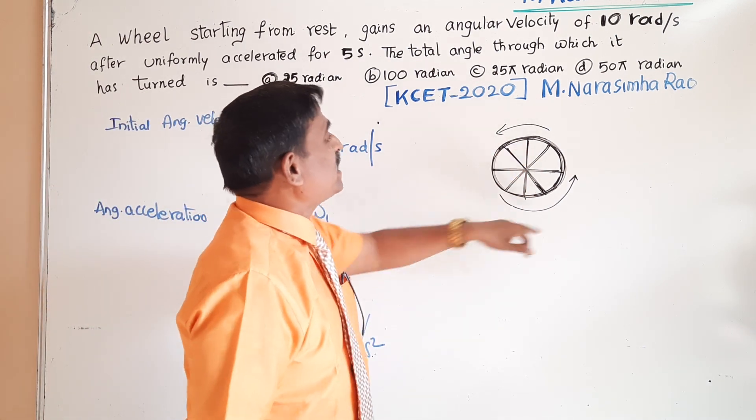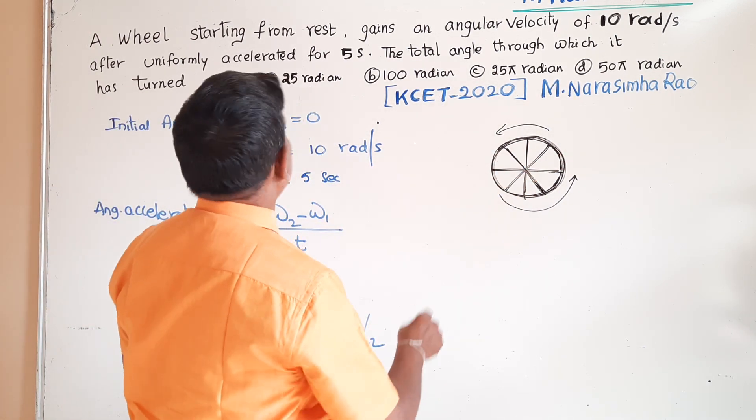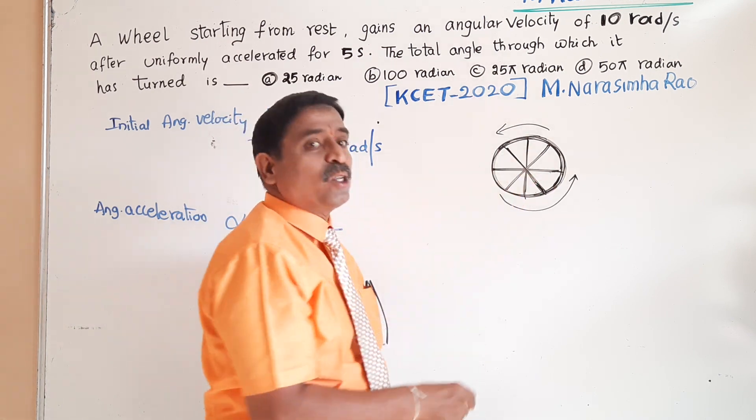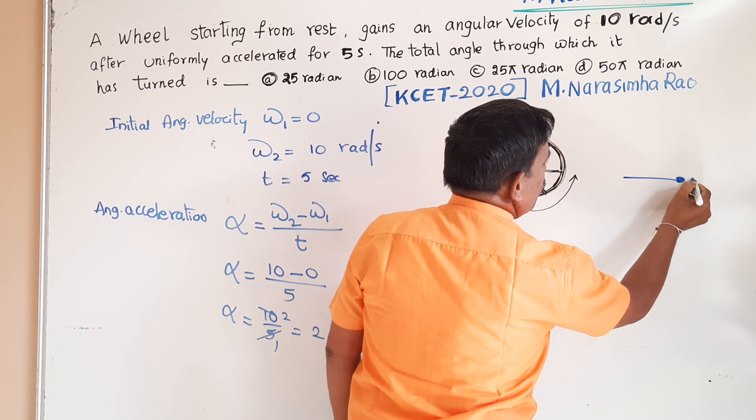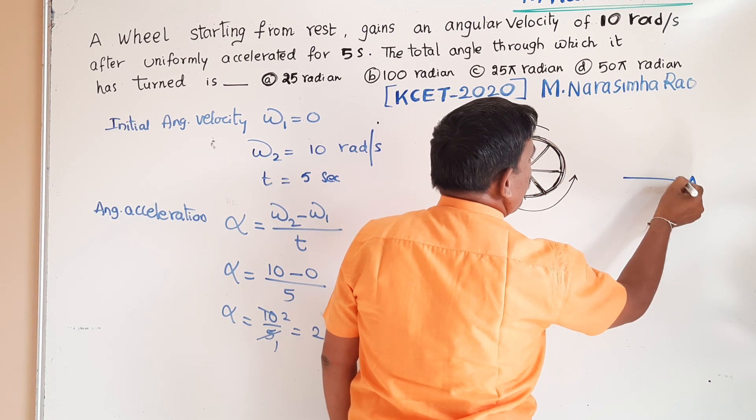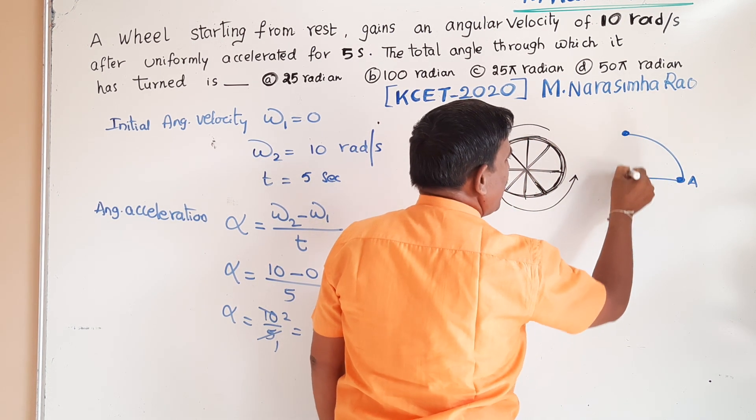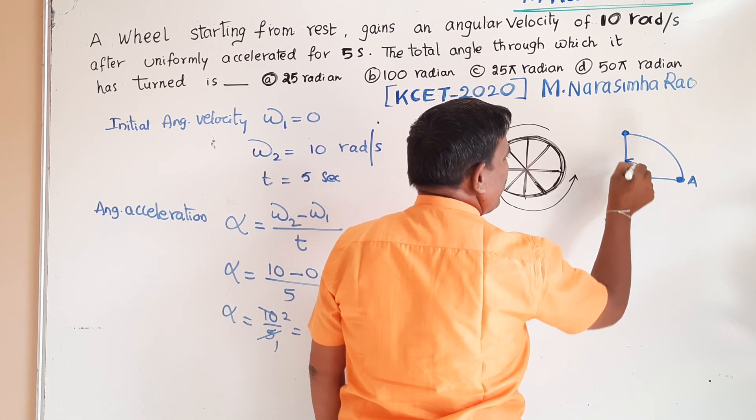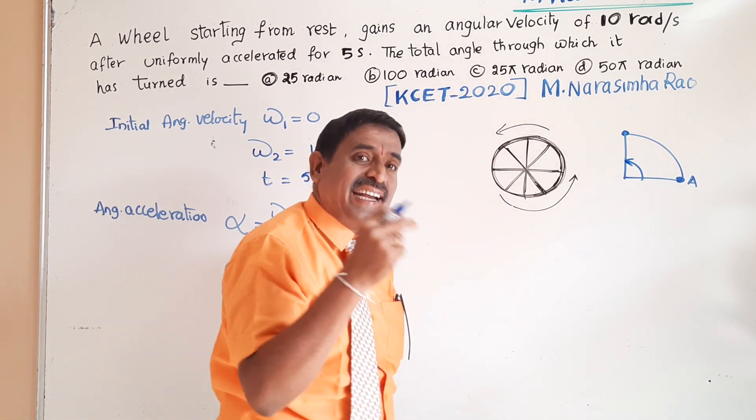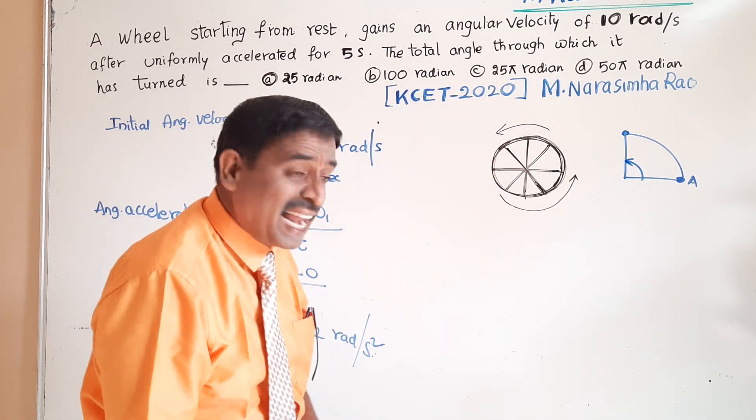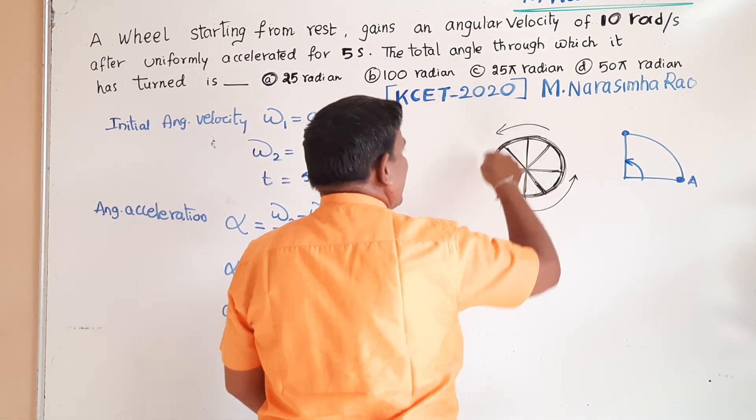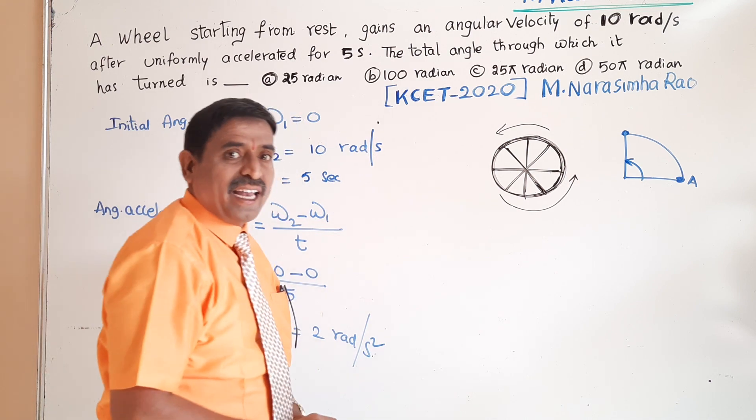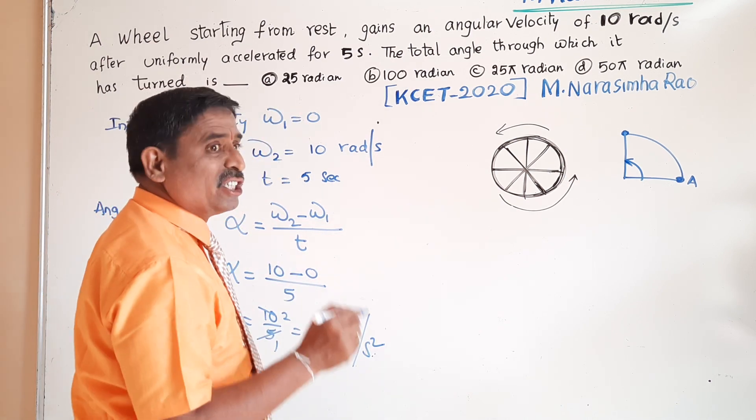After 5 seconds, what is the angle it has rotated? Suppose there is a particle. After 1 second this particle is here. The angle through which it is rotated is 90 degrees or pi by 2 radians. After 5 seconds, what is the angle made by this wheel with respect to initial position?